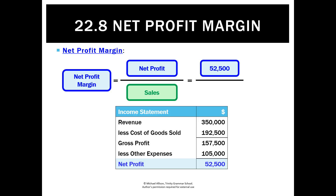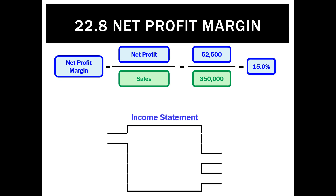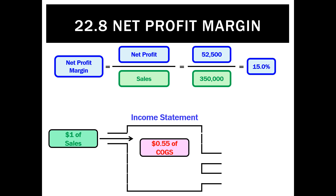In this case, it's 52,500 divided by 350,000, which equals a net profit margin of 15%. What does that mean? It means as a dollar of sales comes into our income statement, 55 cents of that is cost of goods sold, which results in a gross profit of 45 cents on each sale.